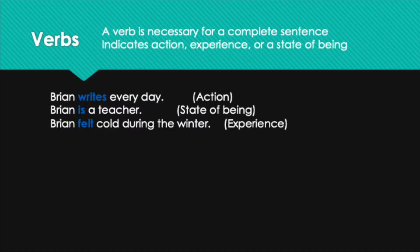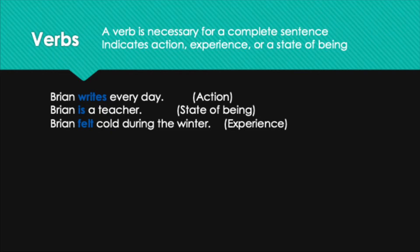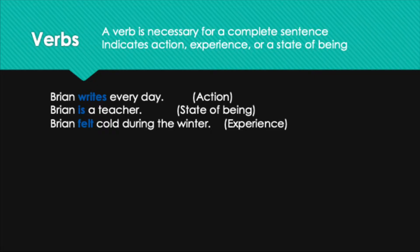The first part of speech we need to look at is a verb. Verbs are very important in the English language. They give a sentence its action, if it has action, or they talk about the state of being. A verb is necessary for a complete sentence — if you have a set of words without a verb, it cannot be a sentence. For example: 'Brian writes every day' — writes is an action verb. 'Brian is a teacher' — is a state of being. 'Brian felt cold during the winter' — felt is a verb talking about his experience.